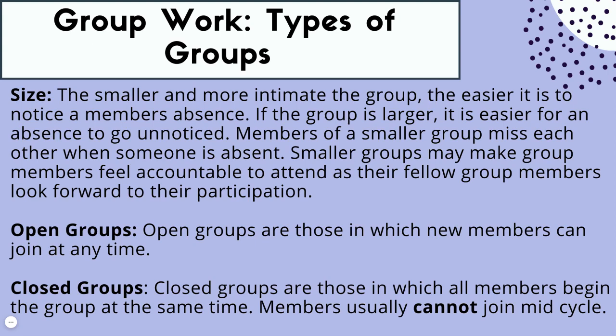Closed groups are ones in which members begin at a certain point — you can enter at week one or week eight, and that's it. In closed groups, there's very little fluctuation of who's entering, so these groups tend to have a tighter bond, stronger community, and stronger participation. Members cannot join mid-cycle, and there are usually absence policies.